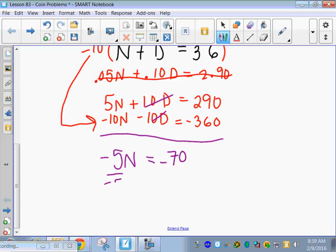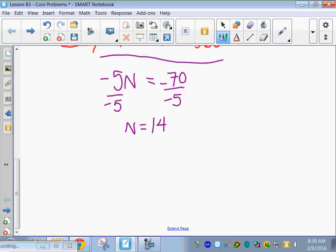Okay, now I'm going to divide both sides by negative 5. So, N equals positive what? Good. Alright, and we do need units on these. N represents the number of nickels. Good. So, we have 14 nickels.